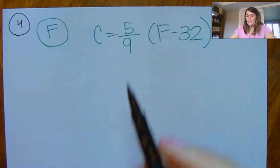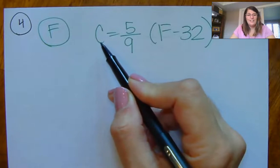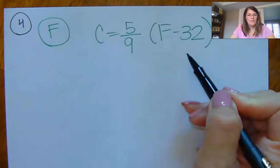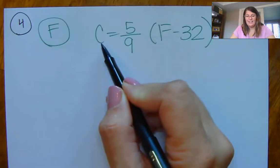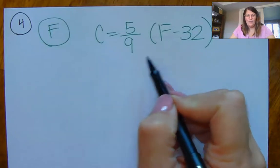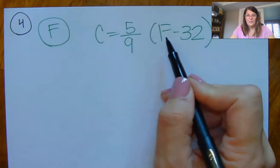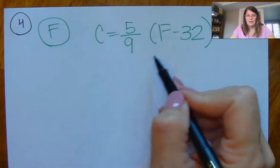And this is a true, this is the formula to convert Celsius and Fahrenheit to go back and forth. So if you're given the Fahrenheit temperature, you could use this formula and get the Celsius one. And if you were trying to do it the other way,